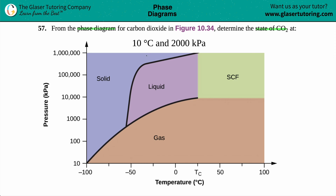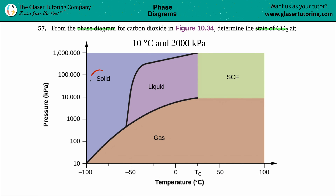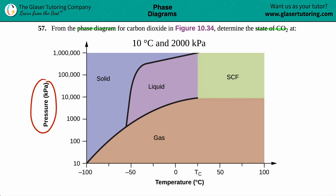So here we have a phase diagram for carbon dioxide, which basically tells us where carbon dioxide is going to be a solid, a liquid, a gas, or if it's entering the supercritical fluid. We just have to find from the information given what state carbon dioxide is in. The x-axis is the temperature in degrees Celsius, and the y-axis is pressure in kilopascals.